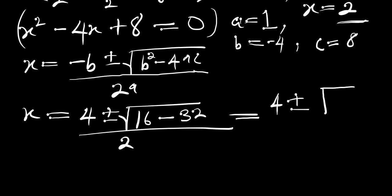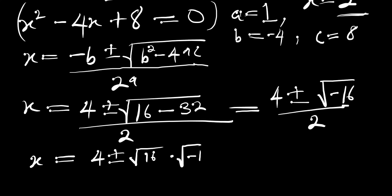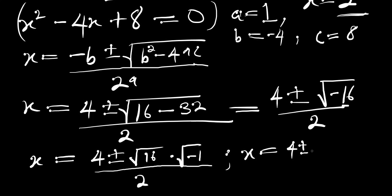The discriminant gives root of negative 16. We write that as root of 16 times root of negative 1, where root of negative 1 is i. So x equals 4 plus or minus 4i, divided by 2, which simplifies to x equals 2 plus or minus 2i.